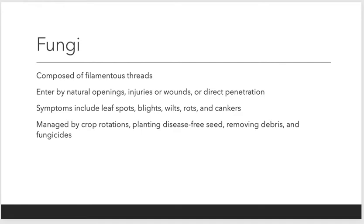Fungi are composed of filamentous threads, and these enter by the natural openings, injuries, or wounds, or even some direct penetration depending on which fungi we're talking about. For example, the stoma on the bottom side of a leaf is a natural opening that can allow a fungus to get inside the plant. Injuries can come from wildlife or us walking through a field, or even applying fertilizer. Symptoms include leaf spots, blights, wilts, rots, or cankers.